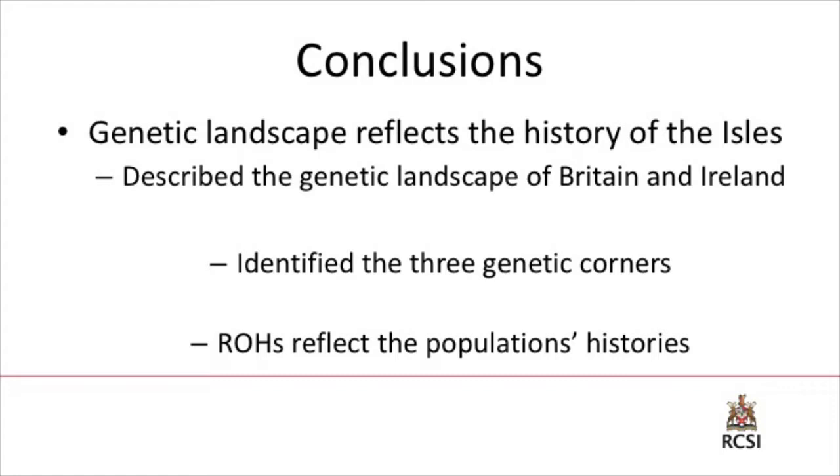To conclude: the genetic landscape of Britain and Ireland really does reflect the history of the islands — it's like reading a history book within the genome. We've described the genetic landscape and identified three genetic corners: the Celtic corner of the west, the Viking corner to the north, and the Saxon corner to the southeast. The ROHs also reflect the population histories of these groups. Thank you all very much for listening.